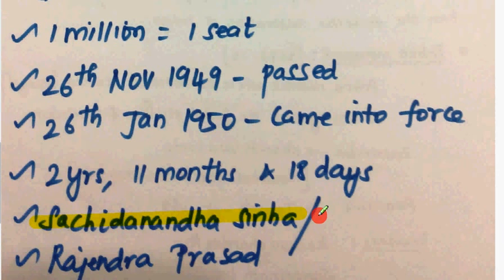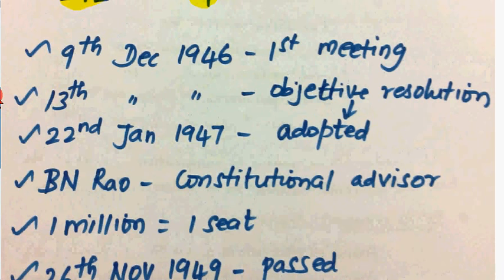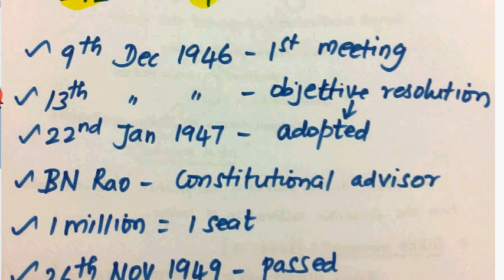The president of the Constituent Assembly — the first president. Our first Prime Minister is also President. On 9th December 1946, the first meeting was held, and on 13th December 1946, the Objective Resolution was introduced.